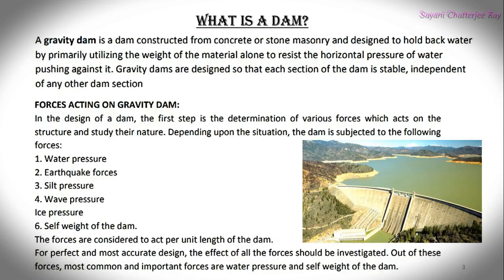First, let us understand what a dam is. A dam is a barrier or structure constructed to create a reservoir by storing the river flow in the valley. A gravity dam is a dam structure designed in such a way that its own weight resists the external forces acting over it. This type of dam is more durable and requires low maintenance than any other type.